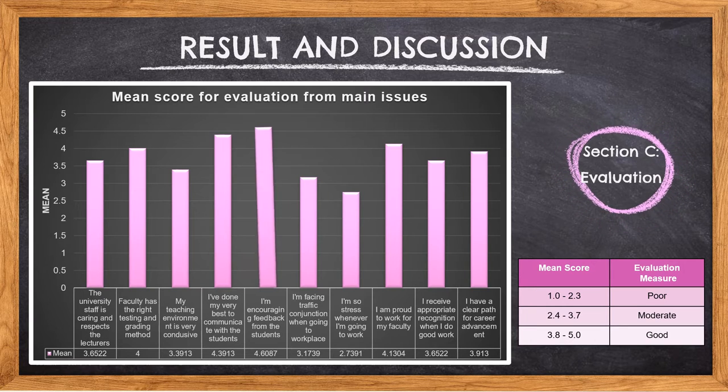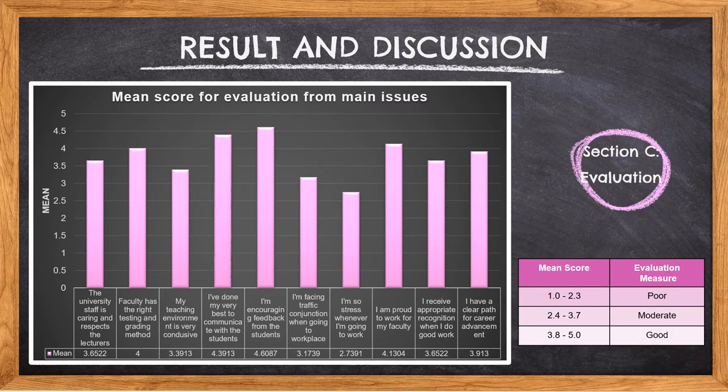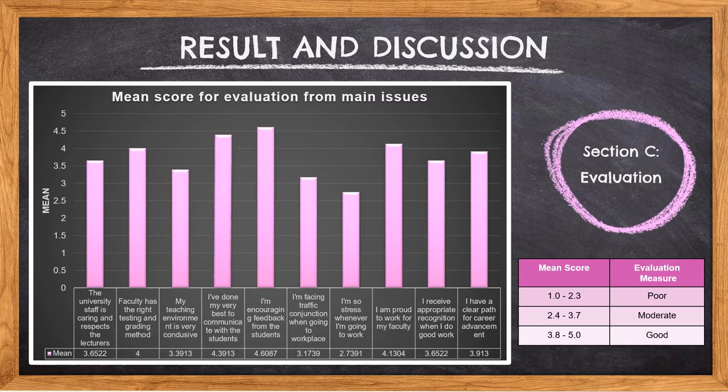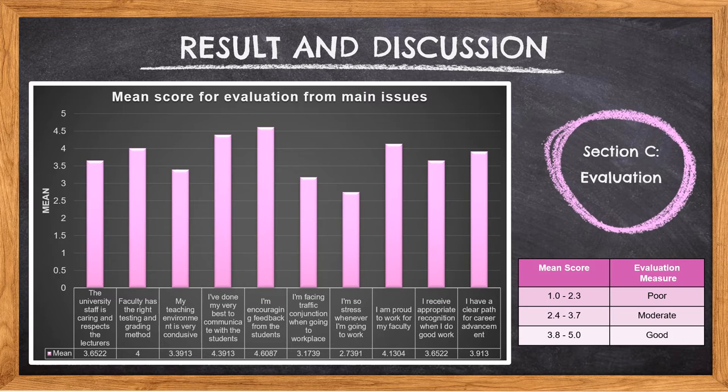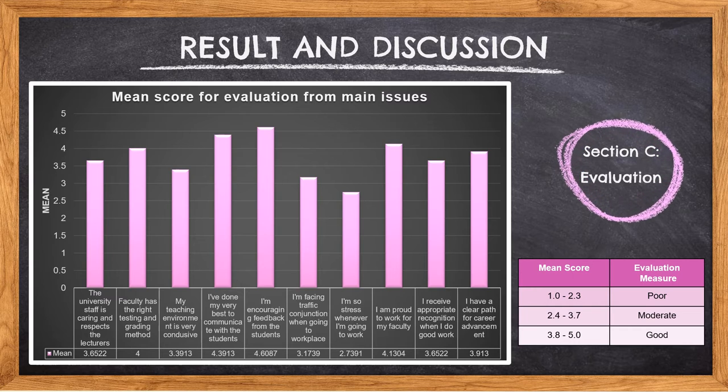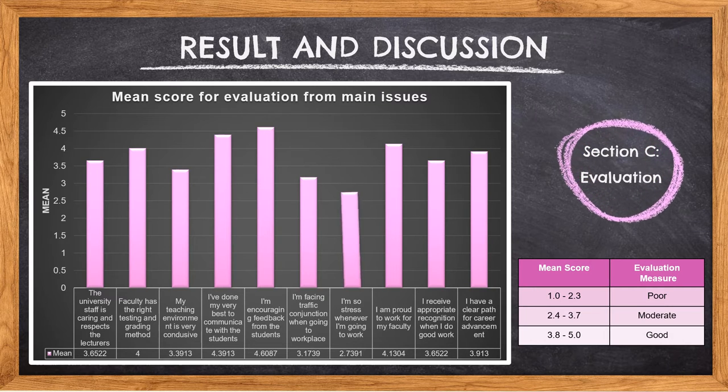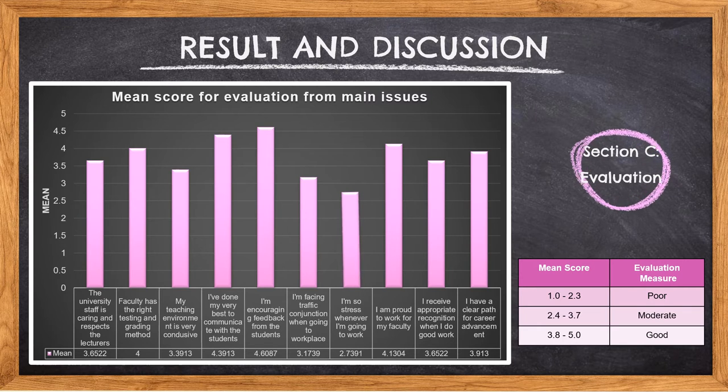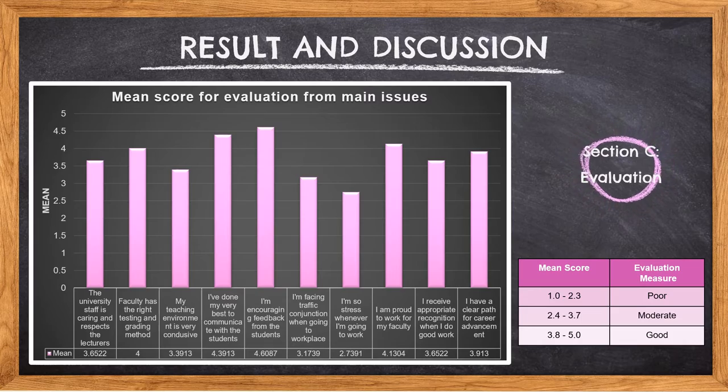Based on the graph the highest mean score is 4.6087 which states that they are encouraging feedback from students and it shows good evaluation. The second highest mean for evaluation from main issues is 4.3913 which is I have done my very best to communicate with the students. Based on the results it shows that lack of communication can be a major issue if it always happens. The lowest mean score for the evaluation of lecturers towards the major issues faced by them is 2.7391 which is I'm so stressed whenever I'm going to work and it was under moderate level. The finding indicates that most lecturers disagreed they had stress when going to work.